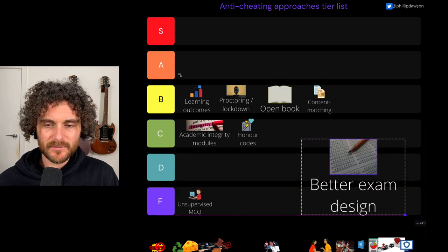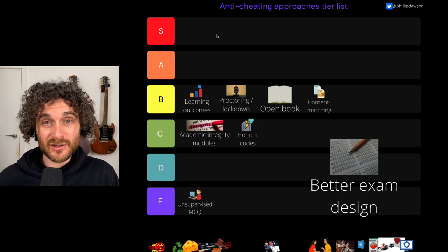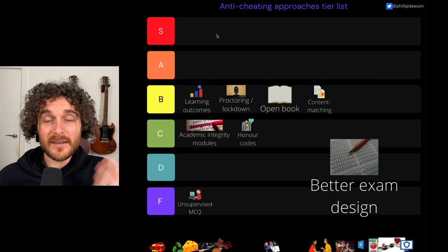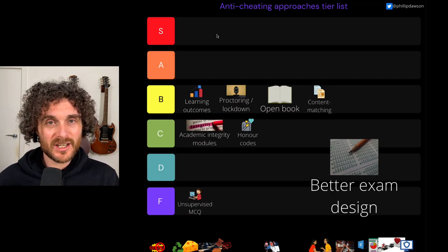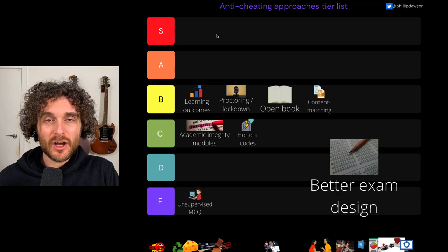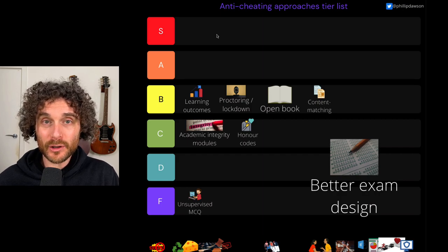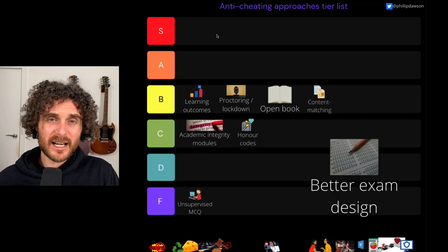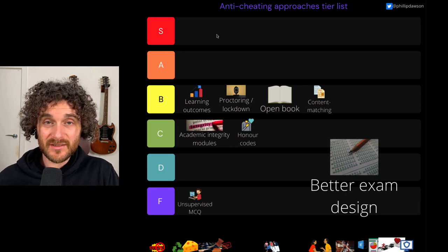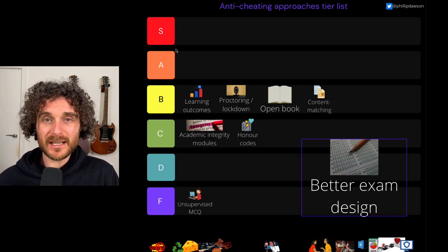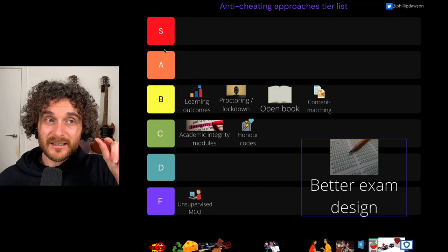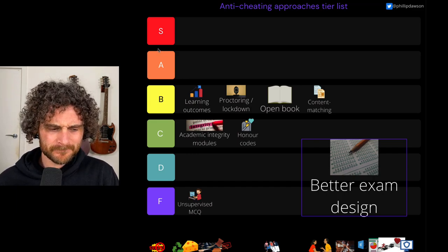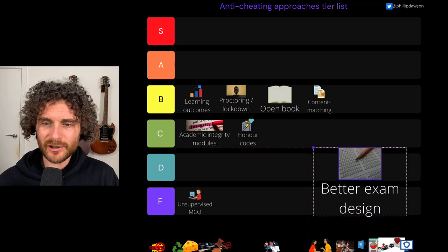Better exam design — you know how there are stupid mistakes you can make with exam design? Like setting high-stakes multiple choice quizzes, reusing last year's ones, and not having a big bank of questions, and not randomizing the order. Also things like computer-generated questions around a theme, say calculation-type questions. All these clever things that people who think about exam design come up with — little incremental things that can add up to a fair bit. I'm willing to put that on B.